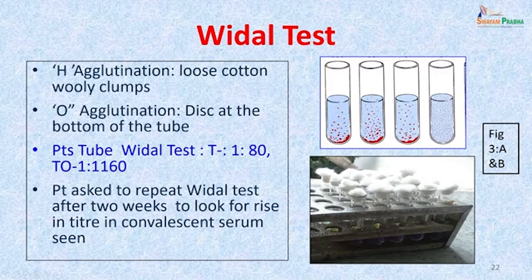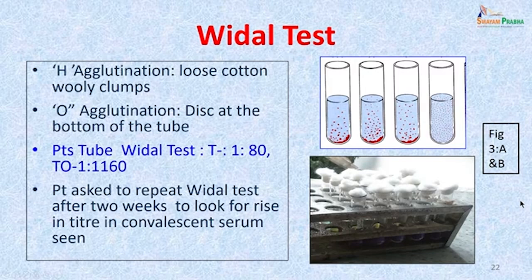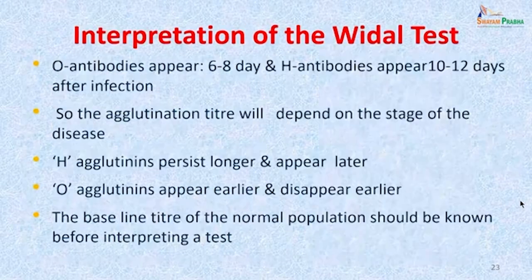The patient's tube test showed a titer of TH 1:80 and TO 1:160. The Widal rack typically has 4 rows of tubes for the 4 antigens used, with 4 dilutions each. The patient was asked to repeat the Widal test after 2 weeks because both agglutination titers were borderline — we wanted to look for a rise in titer in the convalescent serum.